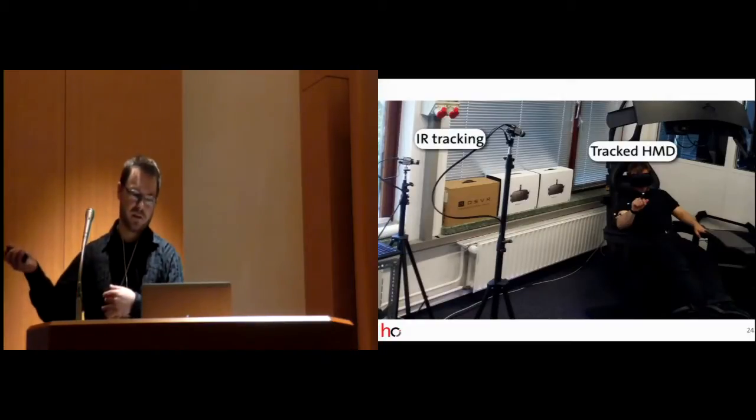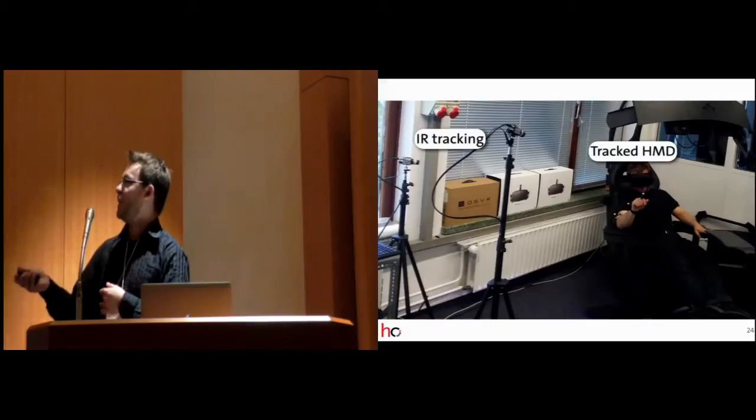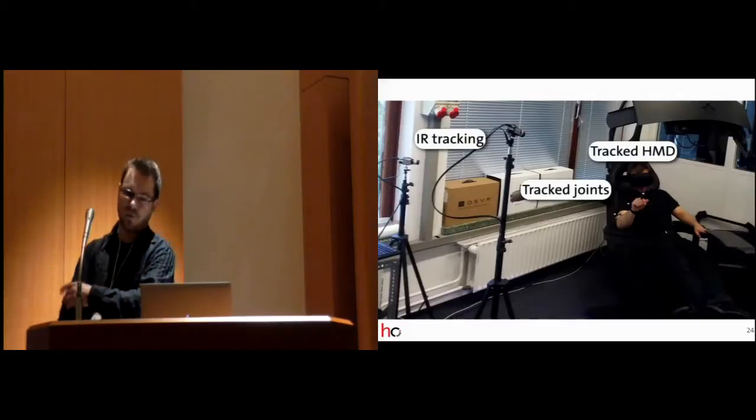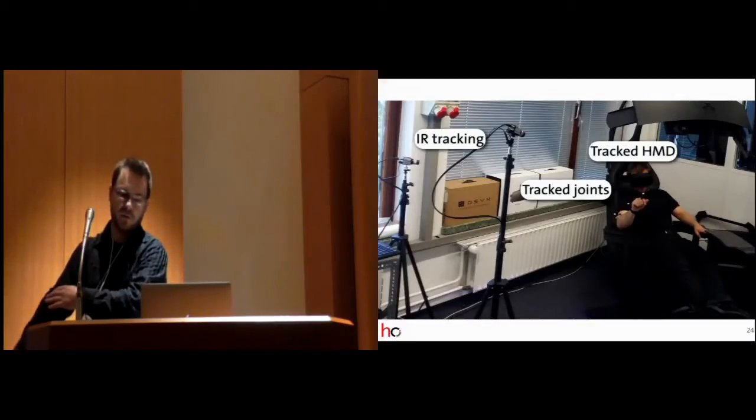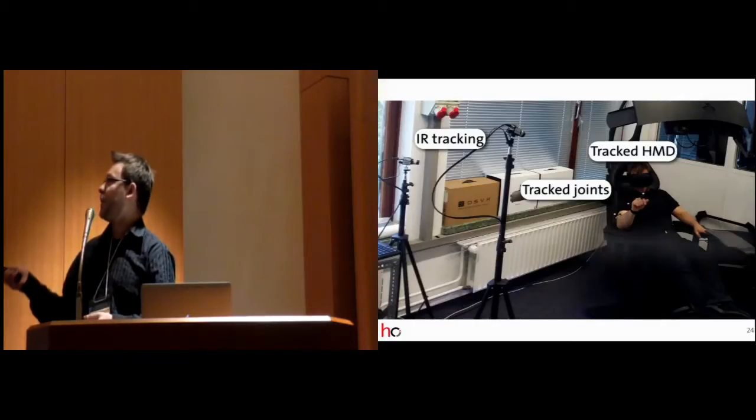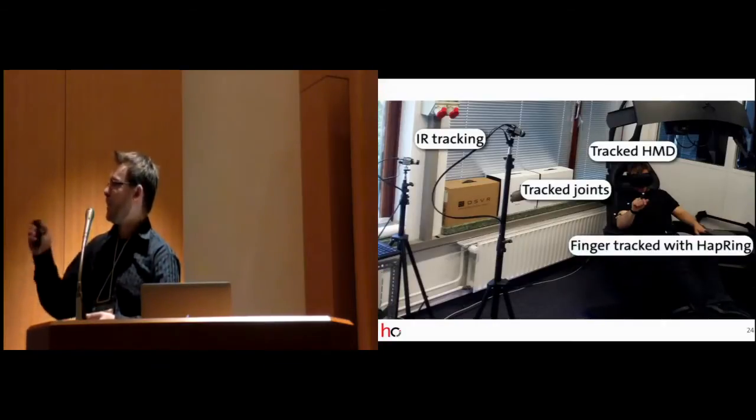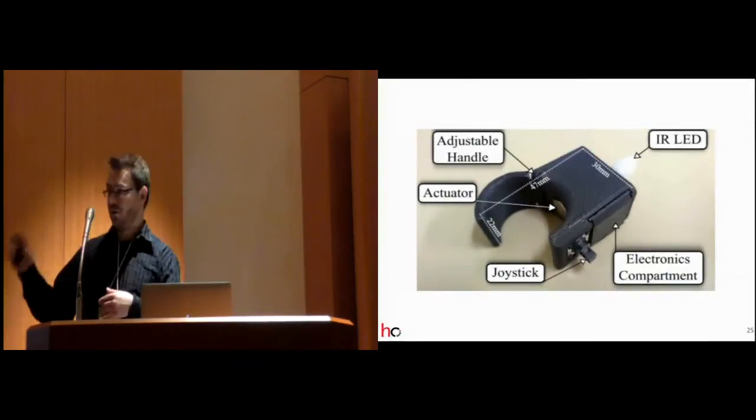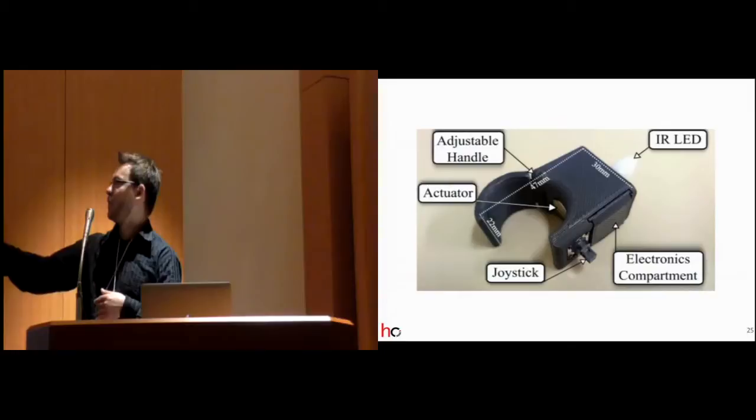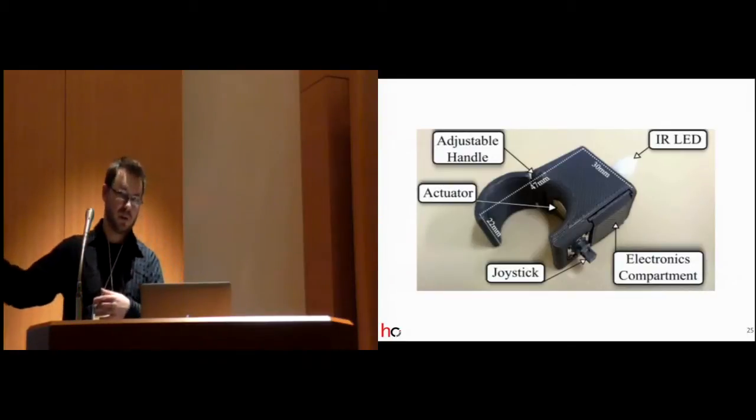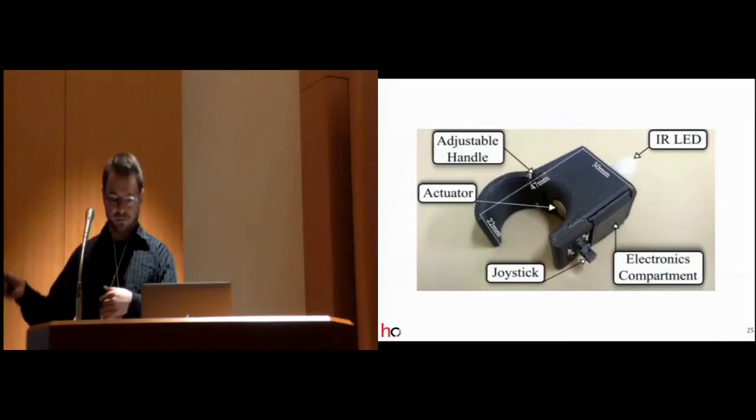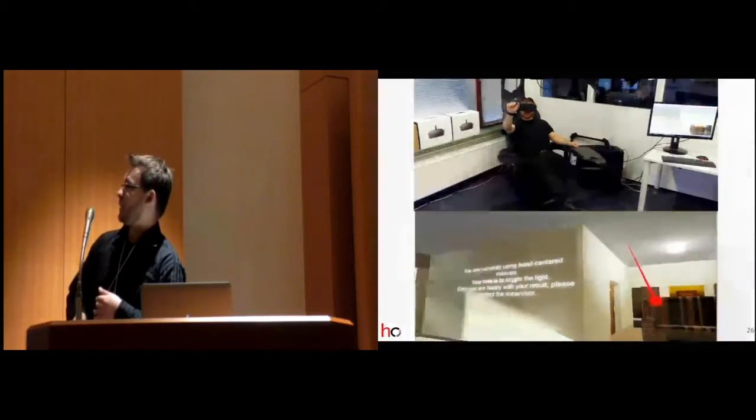So, we did what we had. And we had the PPT system, meaning we could track, of course, the HMD. And we had to track the single joints with a little marker on each joint. So, we had a joint on the elbow, on the wrist, and on the finger. We had our hap ring, which is a device built with my colleague. It also offers an infrared LED for tracking, but it also had a joystick for the input, allowing us to really confirm selections in the interface that we did.